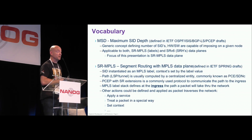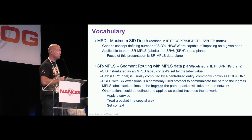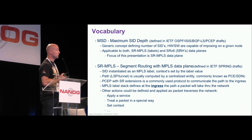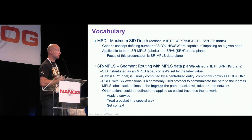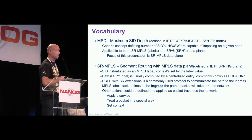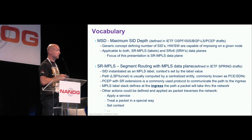Vocabulary: MSD, maximum segment depth, is an attribute that applies to either a link or a router, distributed through routing protocols, and could be distributed through PCEP or BGP-LS northbound to the controller. I'm going to be talking about SR-MPLS here. The same limitations are applicable to SRv6, and you could use your imagination.